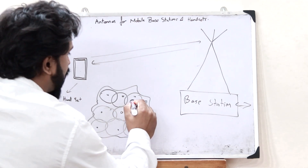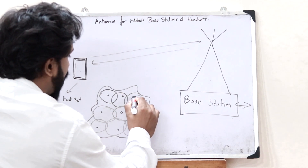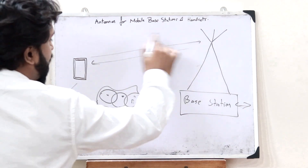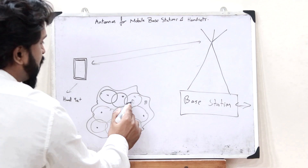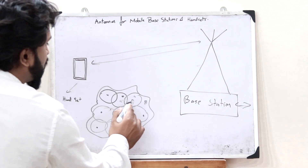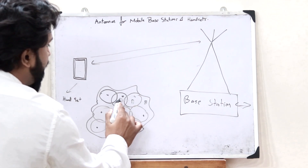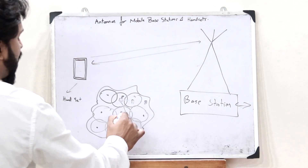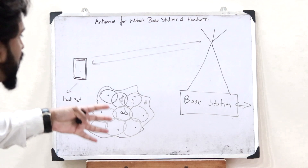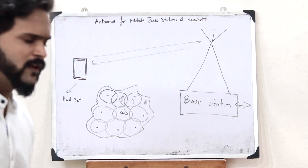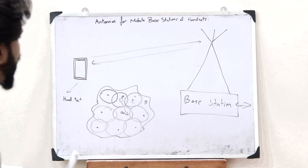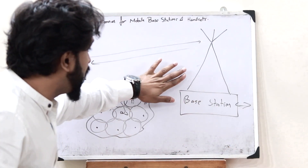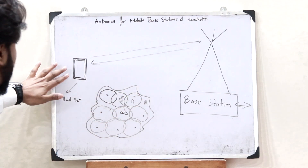When a particular smartphone is within the coverage area of a particular base station, that is when we say our smartphone is connected to it. When a person moves from one place to another, the smartphone will automatically get connected to the nearest base station. This is how a communication system works. From this, we can deduce what types of antennas are used for base stations and for handsets.